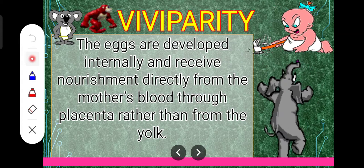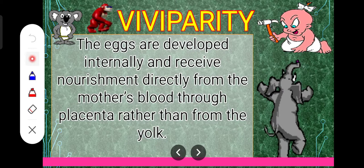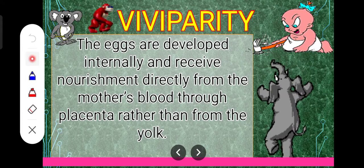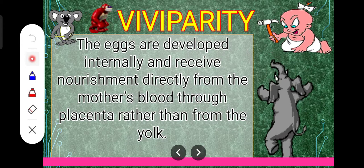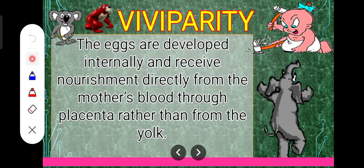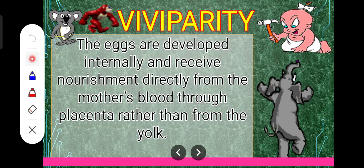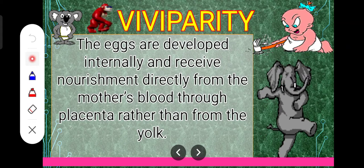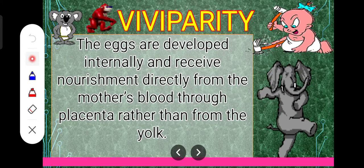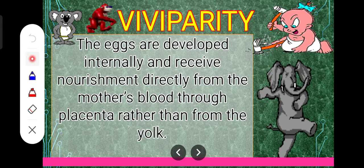Next, we have viviparity. The eggs develop internally and receive nourishment directly from the mother's blood through the placenta rather than from the yolk — these animals give birth to live young. Viviparity is found in almost all mammals, including humans, and some amphibians. Examples include elephants, monkeys, humans, and dogs — anything that develops internally and receives nourishment from the mother's placenta.